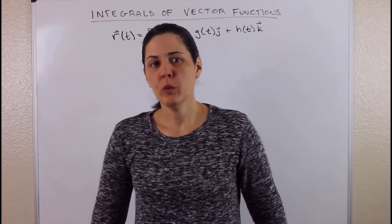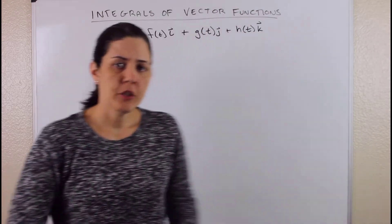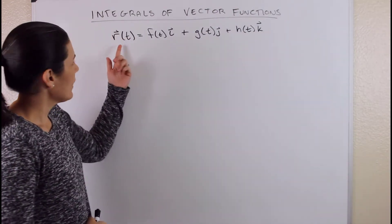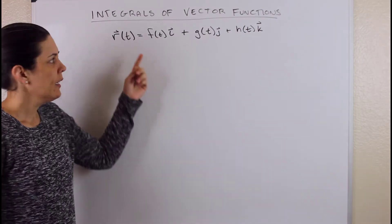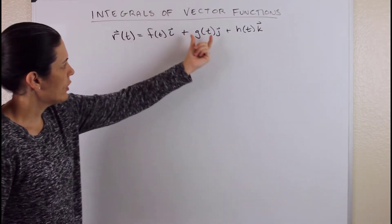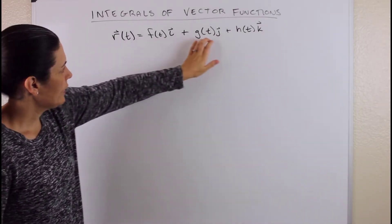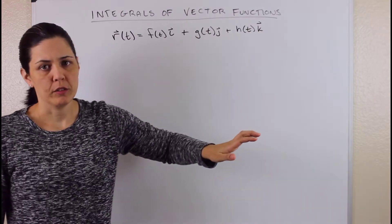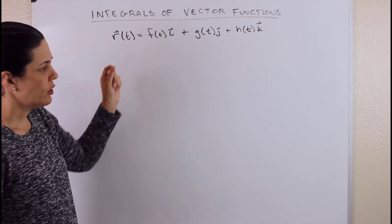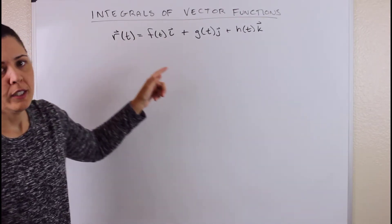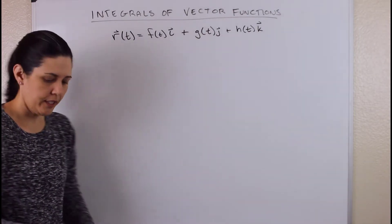In this video we're going to talk about integrals of vector functions. A vector function R of T has component functions that describe some relationship with T, giving values in the I, J, and K directions. When you put all that together you get a point in space, and your vector goes from the origin to that point. Now let's do some integration with it — we have indefinite and definite integrals.